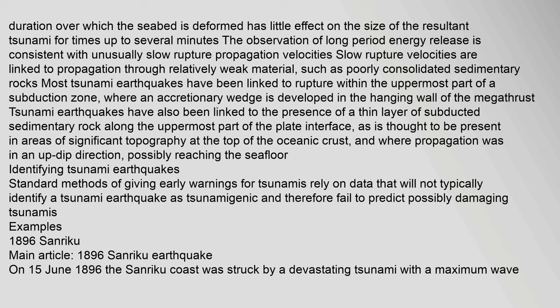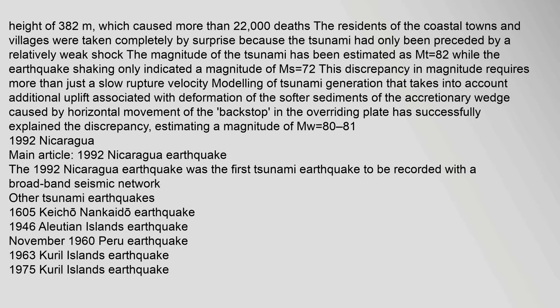On 15 June 1896, the Sanriku coast was struck by a devastating tsunami with a maximum wave height of 38.2 meters, which caused more than 22,000 deaths. The residents of the coastal towns and villages were taken completely by surprise because the tsunami had only been preceded by a relatively weak shock.